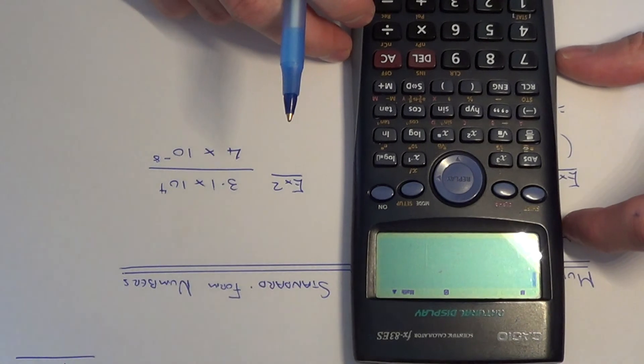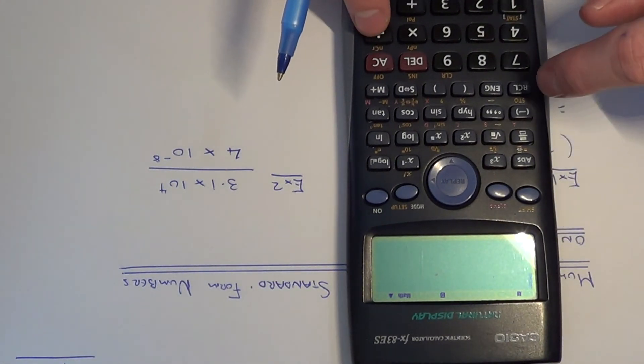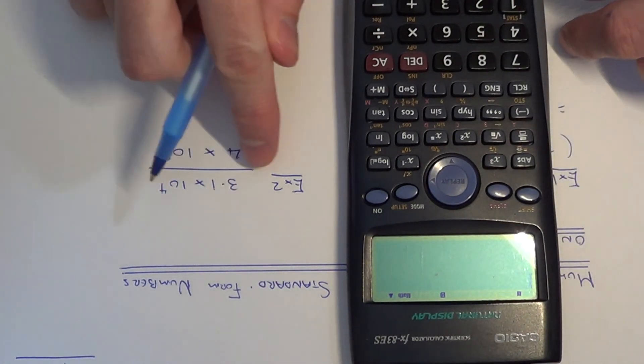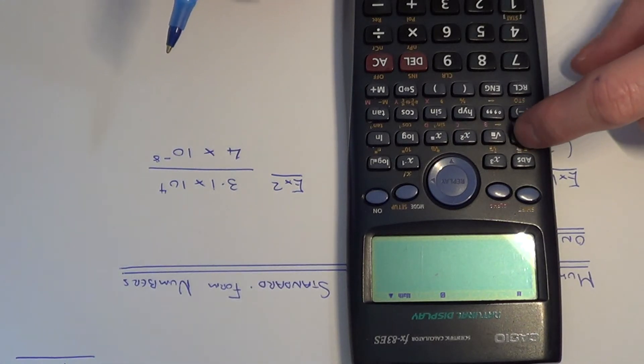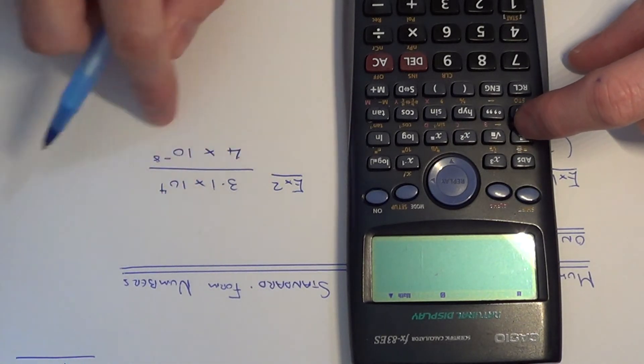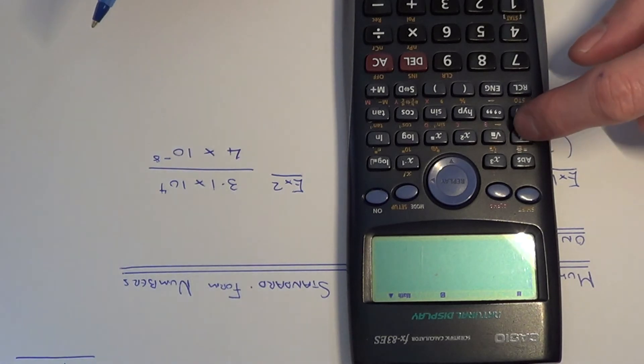There are two ways you can do this. You can either use the divide button and put both numbers in brackets, or I think probably the best way is to copy it in as it is on the page using the fraction key.